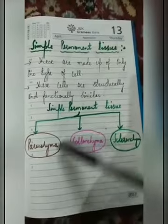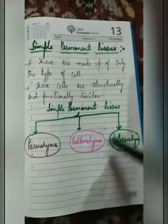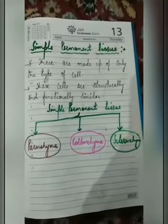Simple permanent tissues are of three types: parenchyma, collenchyma, and sclerenchyma.